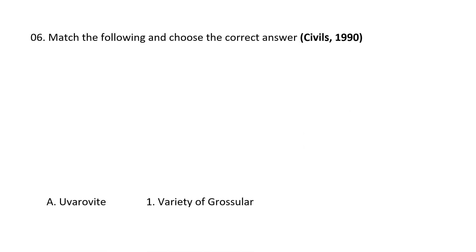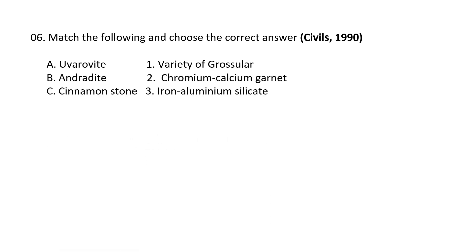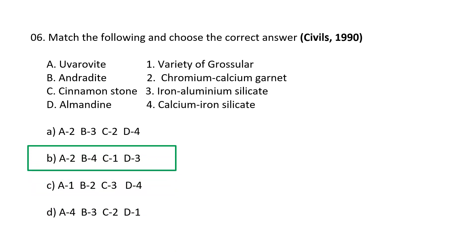Next question. Match the following and choose the correct answer. They have given A, B, C, D and 1, 2, 3, 4. So A is Uvarovite, B Andradite, C Cinnamon stone, and D Almandine. 1, 2, 3: variety of grossular, chromium garnet, iron aluminum silicate, calcium iron silicate. So here the correct answer becomes A. A is Uvarovite which is chromium calcium garnet. And Andradite is calcium iron silicate. And cinnamon stone is variety of grossular. And almandine is iron aluminum silicate or aluminum garnet. So here the correct answer is B.